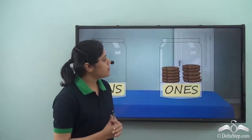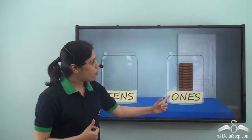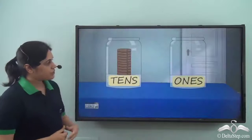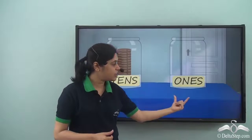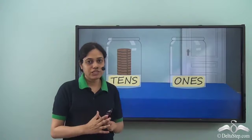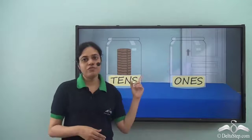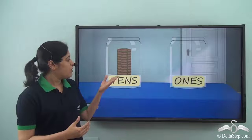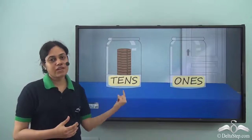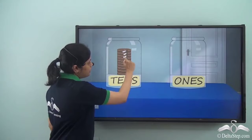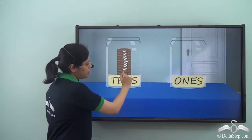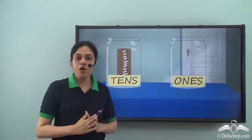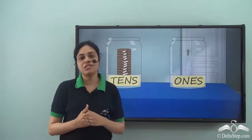As soon as Abir adds the tenth cookie, they all form a pile and jump to the tens jar. When Abir added the tenth cookie, the cookies formed a pile, popped out of the ones jar, and jumped into the tens jar. Abir was really surprised. We see a pile of ten cookies — one, two, three, four, five, six, seven, eight, nine, ten. There are ten cookies, so there is one single pile of ten cookies, whereas the ones jar is empty.